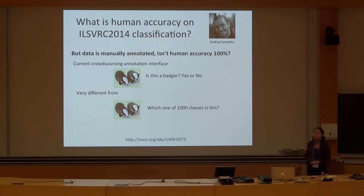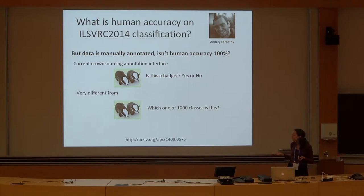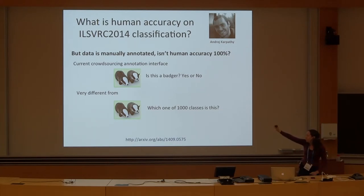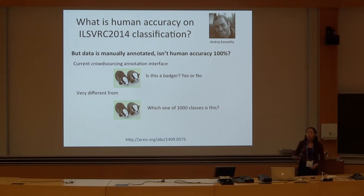So figuring out human accuracy — the data for the ImageNet Challenge is manually annotated, so shouldn't human accuracy be 100%? The current crowdsourcing annotation interface we use basically shows the user an image and asks, 'Is this a [category]? Yes or no.' So we do this with 10 workers, average the results across many workers, and do additional verification. This is very different than showing somebody a picture and saying, 'Which one of 1,000 classes is this?' — which is what computers are asked to do.